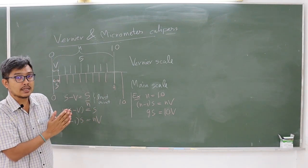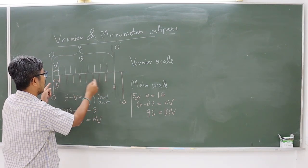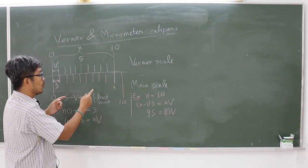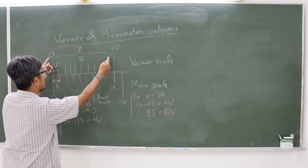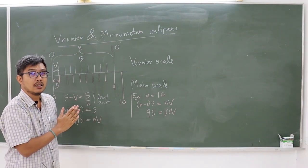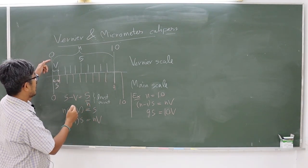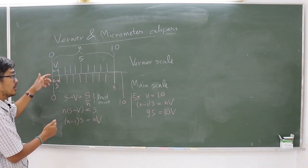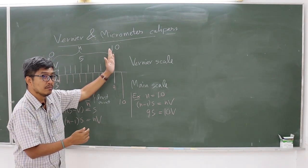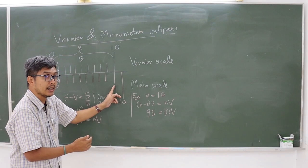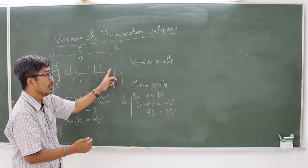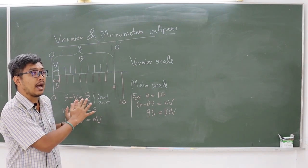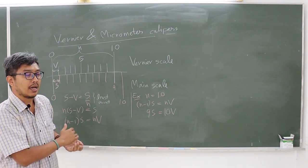This means that in the same total length, there are 9 main scale divisions and 10 vernier scale divisions. If the main scale and vernier scale both start from zero at the end, the main scale will finish at line number 9, but the vernier scale will finish at line number 10. All of these are the principle of the vernier scale.